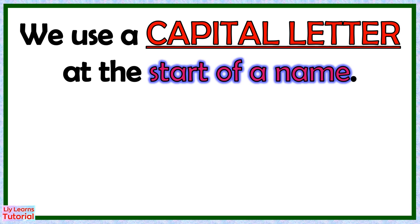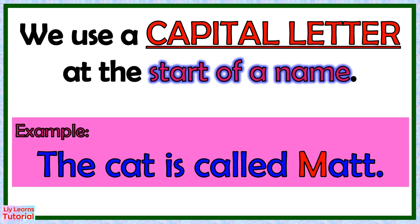We use a capital letter at the start of a name, like a proper name of an animal. For example, the cat is called Matt. Matt is the name of a cat. We write the first letter of the name, which is M, in capital letter.